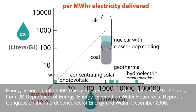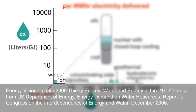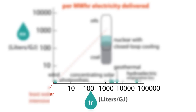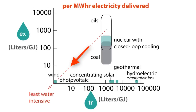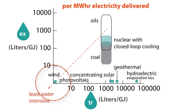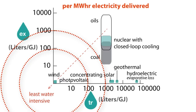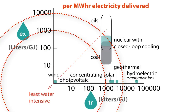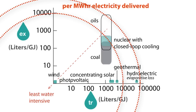Here's a look at the use of water to extract and transform energy resources to electricity. The vertical axis represents liters of water per gigajoule of energy extracted. The horizontal axis represents liters of water per gigajoule of electricity transformed. Energy resources in the bottom left represent the least water used in the combined processes. You can think of processes lying on an arc of equivalent radius as being equivalent in the amount of water used per gigajoule of electricity produced.